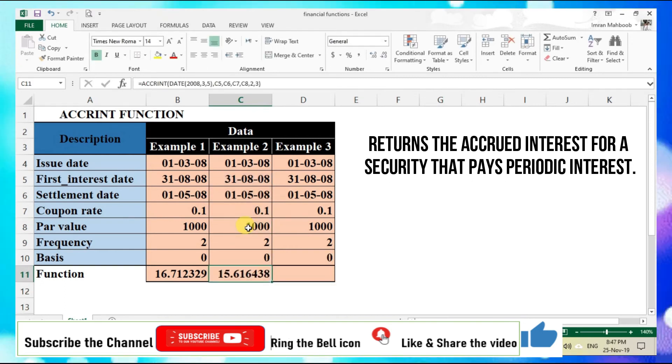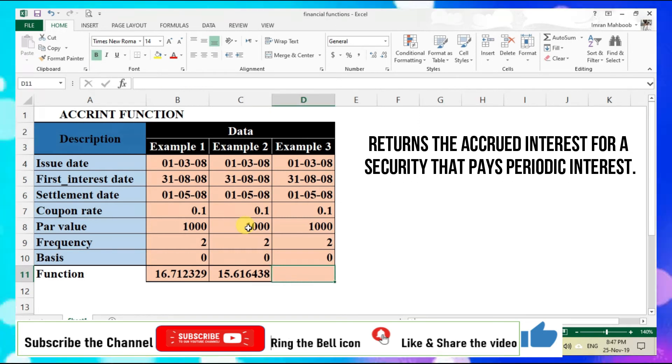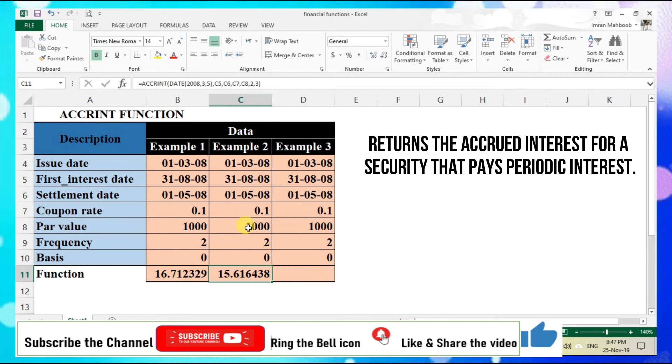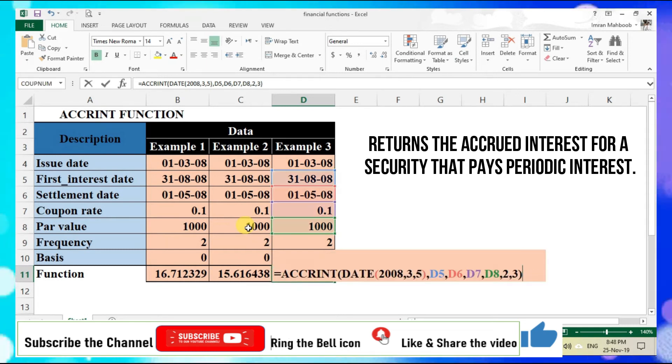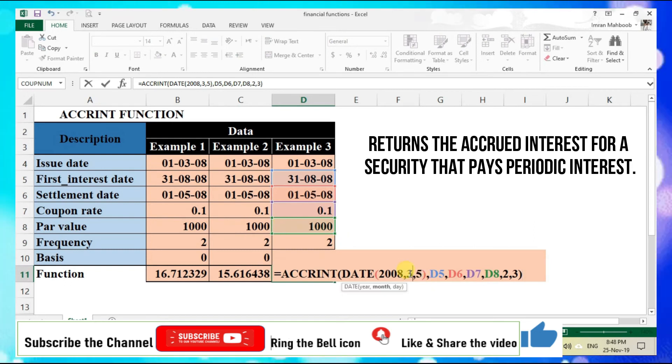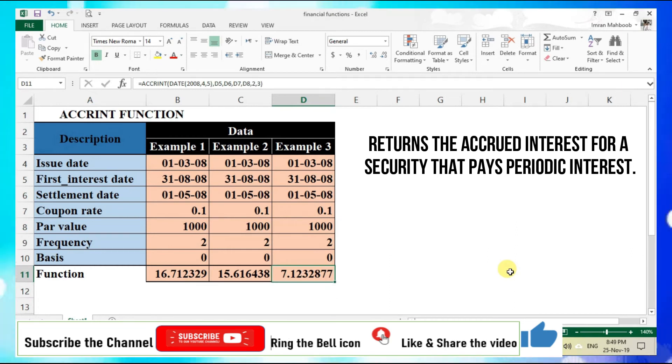Comma, the rest of the values will be the same, close parenthesis and enter. So we have the new value of accrued interest. Similarly in example three, we can again change the date of issue. I'll copy this formula to the next column and paste here. Instead of entering the whole formula again, I will just edit the current formula. Here I can change the date. We have the date 5th of March, I can change it to 5th of April. Sorry, April 4th, and enter. So the new value of periodic interest is here. This is quite simple and easy.